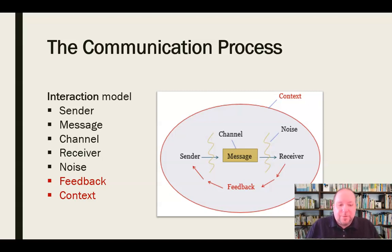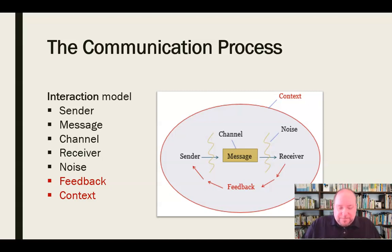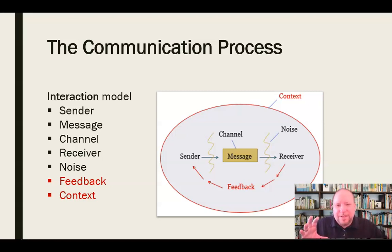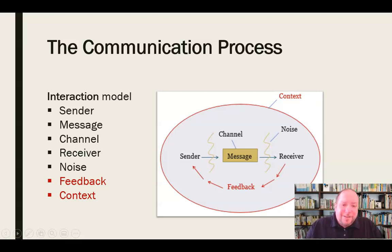The other important addition is what we call context. Context is the situation or environment in which communication is taking place, because we know communication does not take place in a vacuum — it happens somewhere, with someone, in some way. Context tells us you're not going to have the same conversation over a candlelight dinner that you would in the produce section of a grocery store, at a loud concert, or a crowded bar. Those are going to be different conversations about different things. And not only the location, but what's your relationship with the other person? Context filters into all aspects of the communication model. We've added feedback and context, and yet there was still a sense that this was not fully representative of communication — it's a little too neat and clean, because communication is often a very messy process.